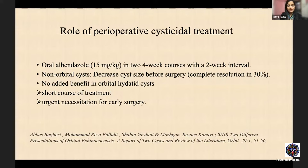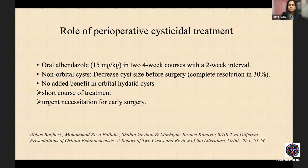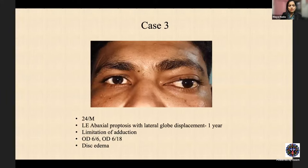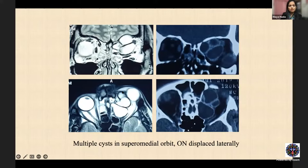Adjuvant oral albendazole is given for orbital hydatid because aspiration may cause some spillage. Case 3: a 24-year-old male with abaxial proptosis, lateral globe displacement, disc edema, and movement limitation. Imaging showed multiple cysts (3–4) in the superomedial compartment up to the apex, displacing the optic nerve laterally. Anterior orbitotomy under GA via a sub-brow incision was performed, with reflection of the periosteum and superior oblique tendon. The superomedial orbit is a tight zone with many neurovascular structures; the large cyst was aspirated with a 26-gauge needle on a 10 mL syringe under vital sign monitoring due to theoretical anaphylaxis risk.